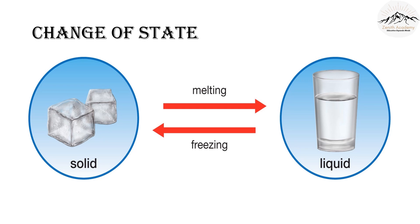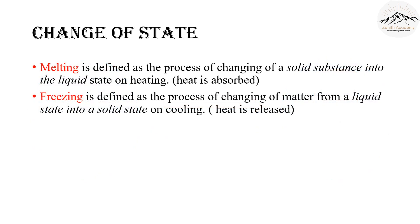Freezing and melting are processes very similar to evaporation and condensation. In case of melting, the solid substance changes into liquid state. This is because the heat is absorbed. And in case of freezing, the liquid state changes into solid state. In this case, heat is released. Take a look at the picture and try to understand these processes. Now let's read the definitions. Melting is defined as the process of changing of a solid substance into the liquid state on heating. Freezing is defined as the process of changing of matter from a liquid state into a solid state on cooling.